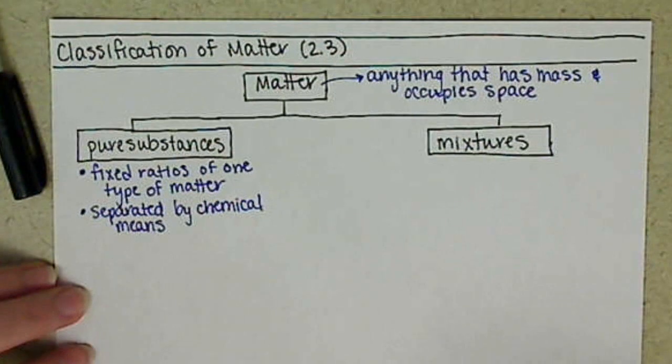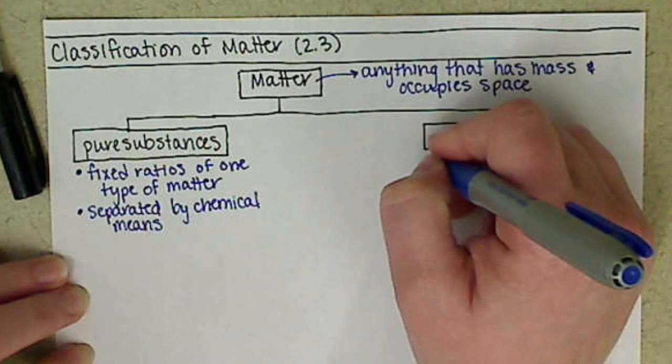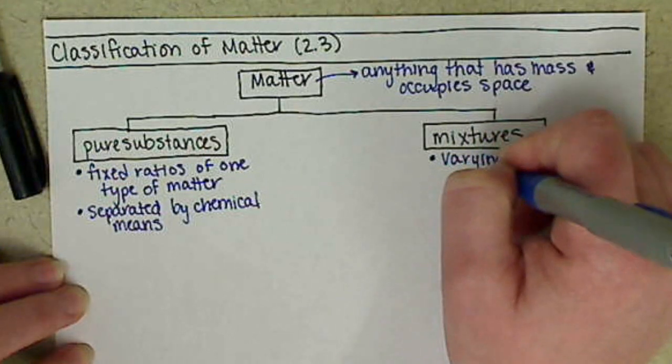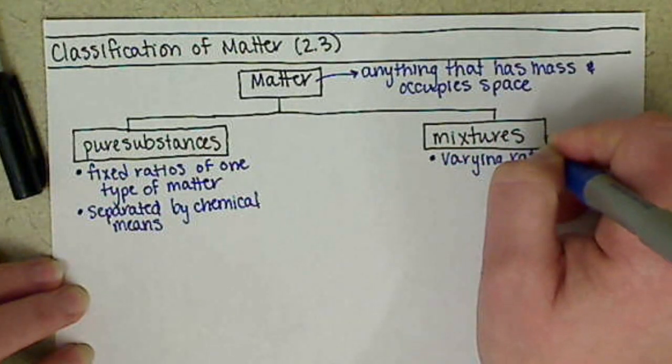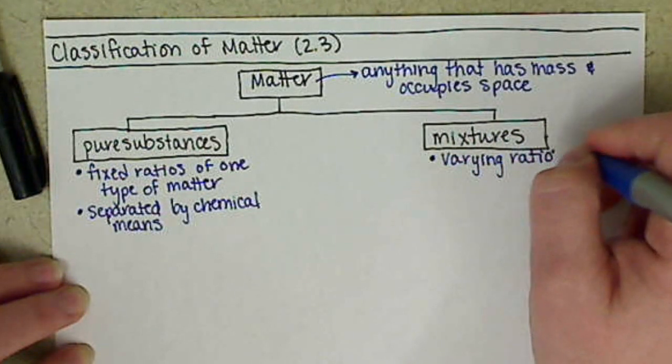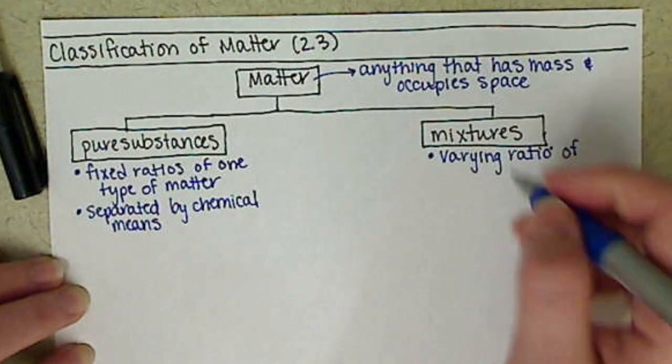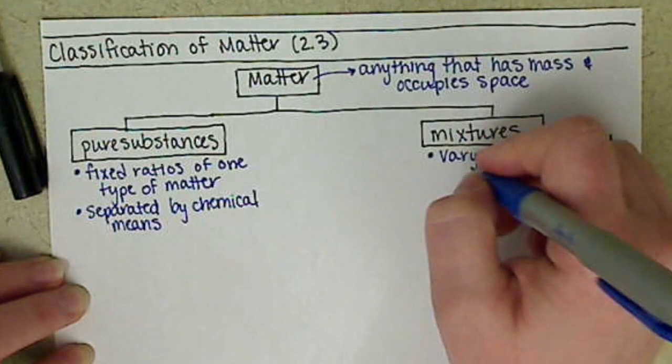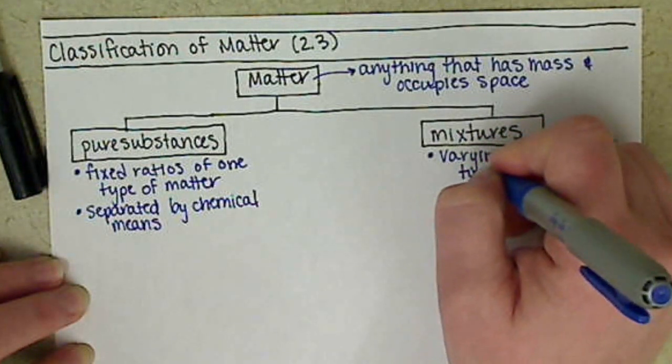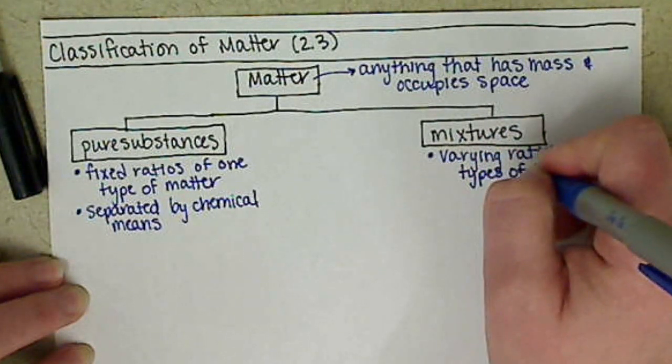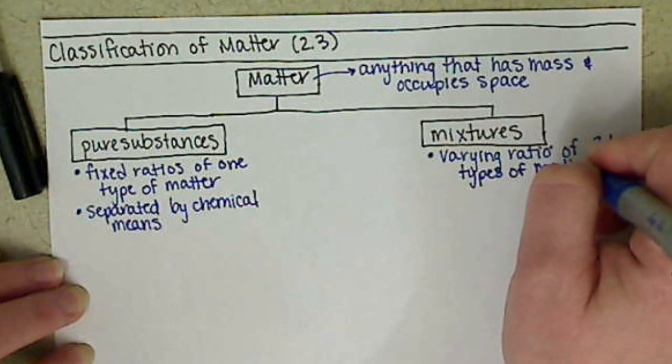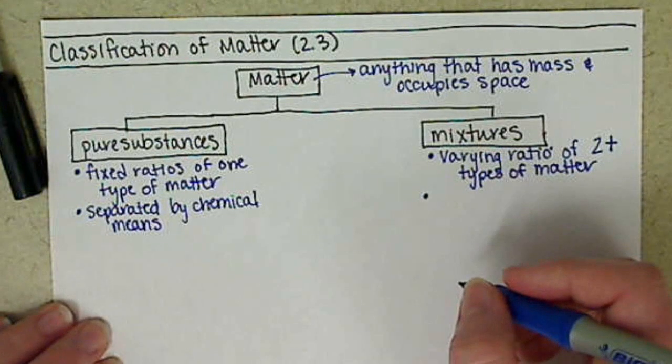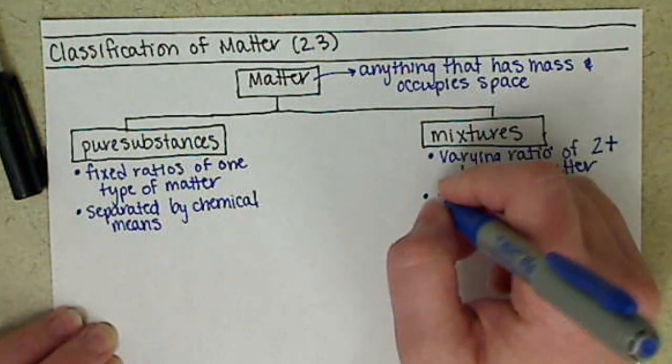Now our mixtures, these are going to have a varying ratio and they can actually have a varying ratio of two or more, so two plus types of matter. And they can be separated by physical means.